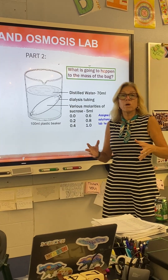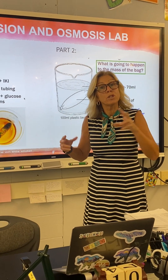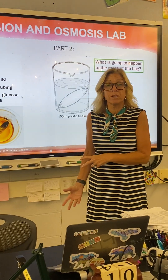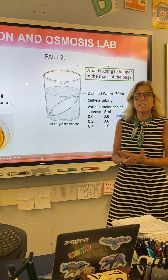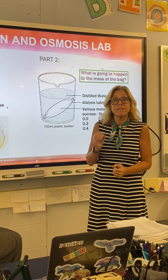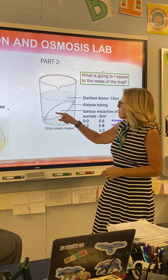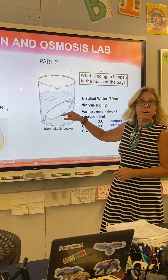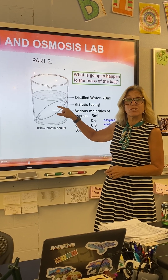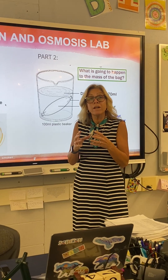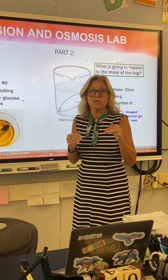Water is always going to flow from a higher water potential to a lower water potential. The best water potential you can have is zero, and distilled water has that. Every time we put osmotically active substances like sugar inside with the water, it lowers the water potential.